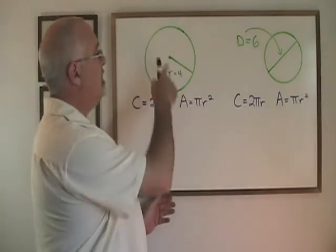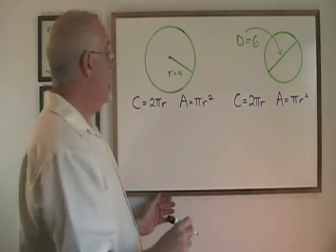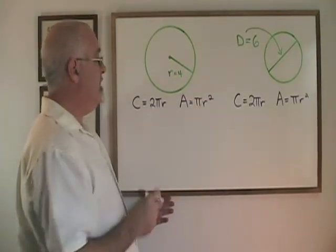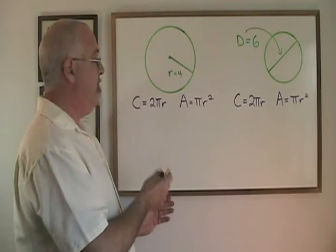In our first example, we have a circle with radius 4. The circumference formula is C for circumference is equal to 2 pi r.